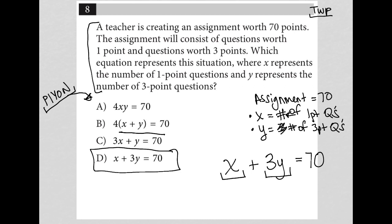Again, X is the number of one point questions, however many I have. 3Y represents the number of three point questions, but also multiplied by the point value per question, which is three points. And when I add all that together, I should get 70. So my correct answer here is choice D.